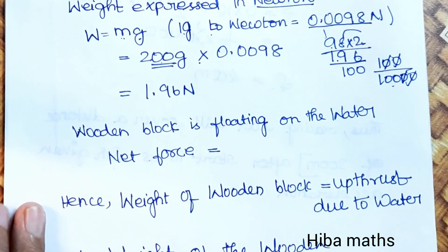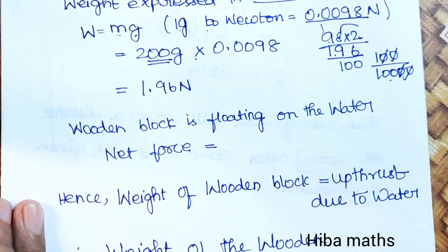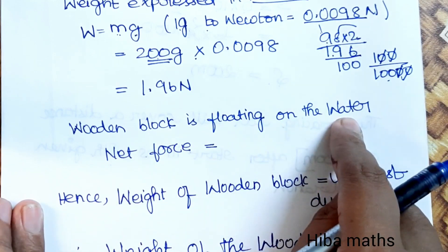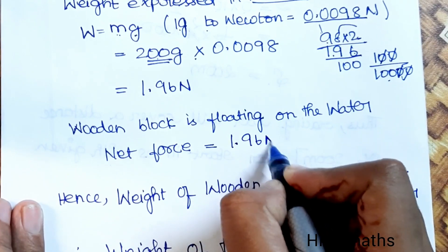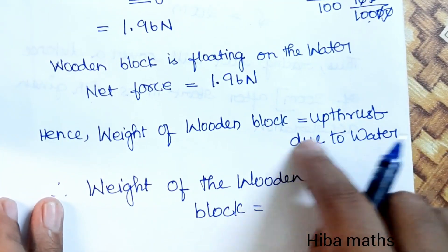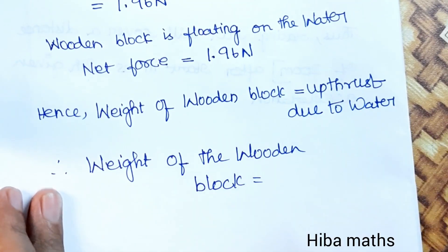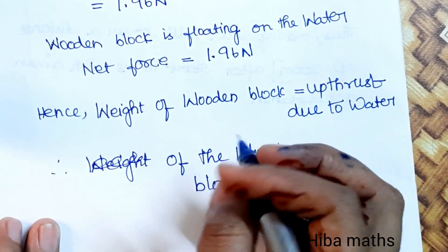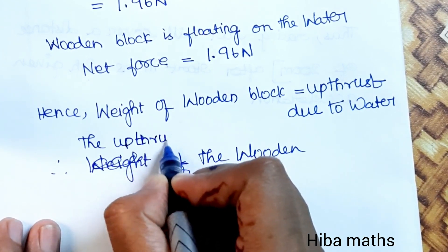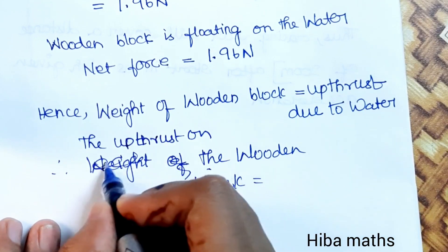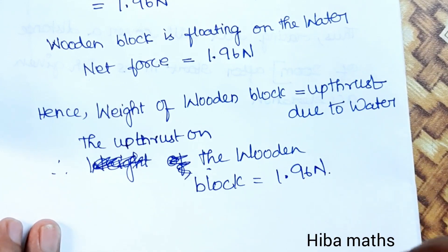The weight of the wooden block equals 1.96 N. Since the block is floating, the upthrust due to water equals the weight of the wooden block. Therefore, the upthrust on the wooden block is 1.96 N.